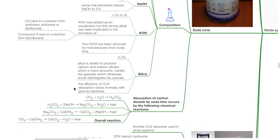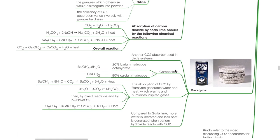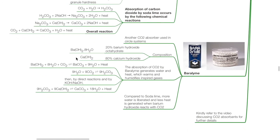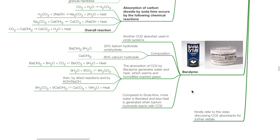Absorption of CO₂ by soda lime occurs by the following reactions: CO₂ + H₂O → H₂CO₃; H₂CO₃ + 2NaOH → Na₂CO₃ + 2H₂O + heat; Na₂CO₃ + Ca(OH)₂ → CaCO₃ + 2NaOH + heat. The overall reaction is: CO₂ + Ca(OH)₂ → CaCO₃ + H₂O + heat. Baralyme is another CO₂ absorber used in circle systems, composed of 20% barium hydroxide octahydrate and 80% calcium hydroxide. Compared to soda lime, more water is liberated and less heat is generated when barium hydroxide reacts with CO₂.